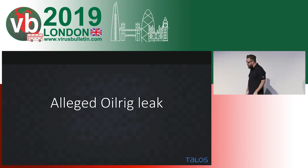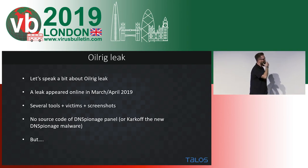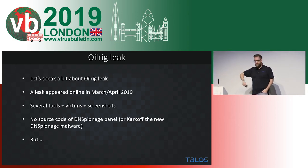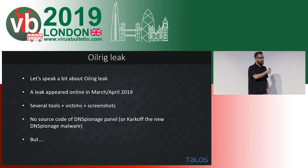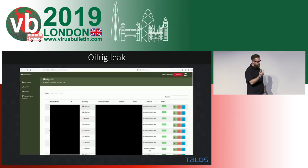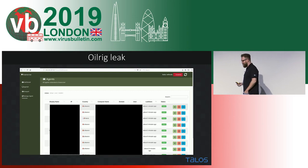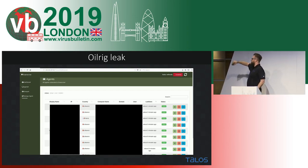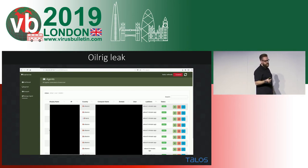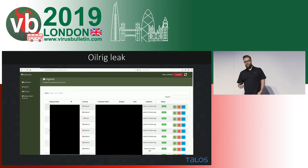And then along came an oil rig. There was an oil rig leak around March-April. Paul and I were able to look at the leaked infrastructure, tools, code, and screenshots. Interestingly, we found no direct evidence of DNS Espionage code in the leak. We also discovered Kharkov later and again observed no direct code overlap. But what we did find was a panel called Scarecrow — every connection was from Lebanon, bar one from France which was a researcher. Lebanon is clearly heavily targeted by this actor. We started to determine this was actually a DNS Espionage / Kharkov panel.